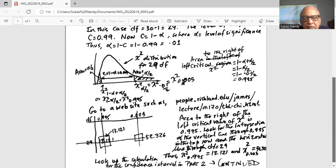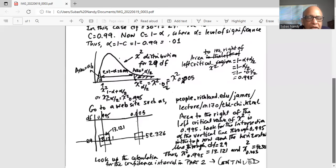We look for the intersection of the vertical line through 0.995 in the top row and the horizontal line through degrees of freedom 29. It intersects at 13.121.